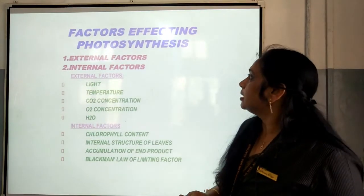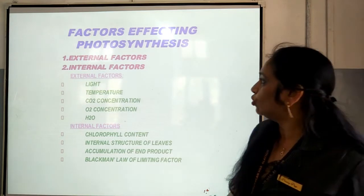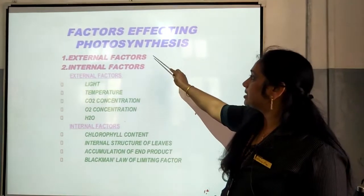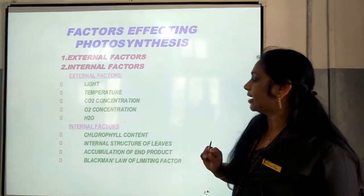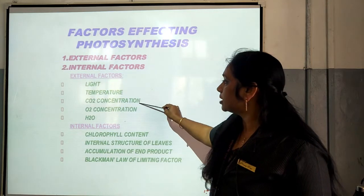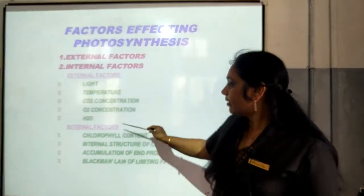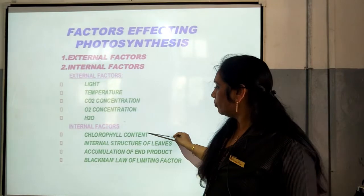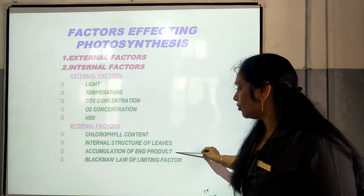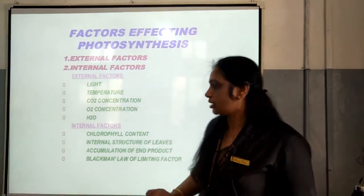Now, related to factors affecting photosynthesis. There are two factors affecting photosynthesis: one is external factor and the other one is internal factor. External factors are light, temperature, carbon dioxide concentration, oxygen concentration, and water. Internal factors are chlorophyll content, internal structure of leaf, accumulation of end products, and Blackman's law of limiting factor. These are the factors which are affecting photosynthesis.